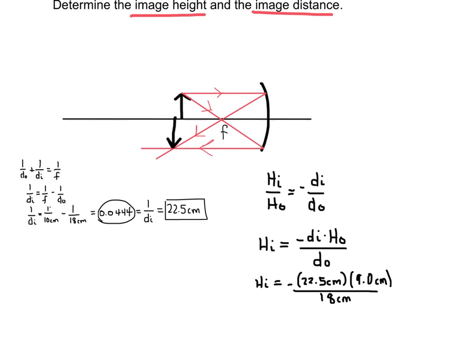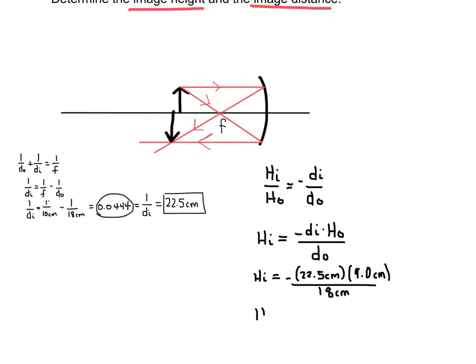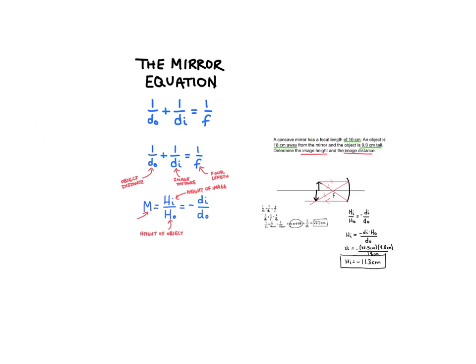And I end up with a height for the image of negative 11.3 centimeters. And that negative sign carries all the way through. This is really important because since I end up with a negative value, that means the image should be opposite, facing opposite, or upside down compared to the object. Which it is. When I drew the picture, I could see that it's upside down. And that's what that negative sign is representing. And so that is the mirror equation.